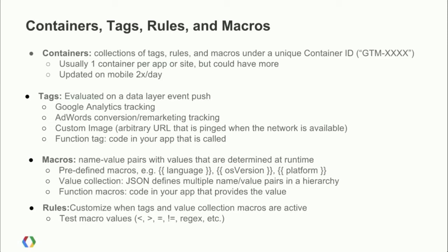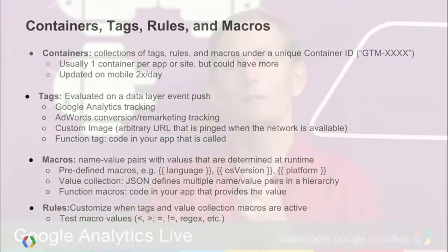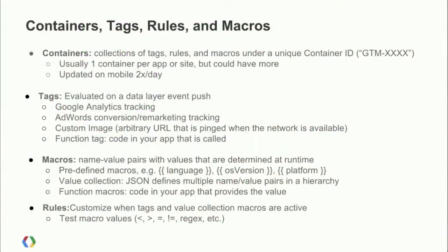Examples of tags include Google Analytics tracking. This means you can take your mobile application and replace all the explicit Google Analytics calls with data layer event pushes. Then in the UI, you set up: when this event happens, I want this GA call to happen — that's a tag. There are also AdWords conversion and remarketing tags in the same way. This removes the requirement for explicit GA calls and a separate AdWords SDK. Instead, you have a unified model where you're just pushing events to the data layer, and then in the UI you associate those events with particular tags — be it GA, be it AdWords.